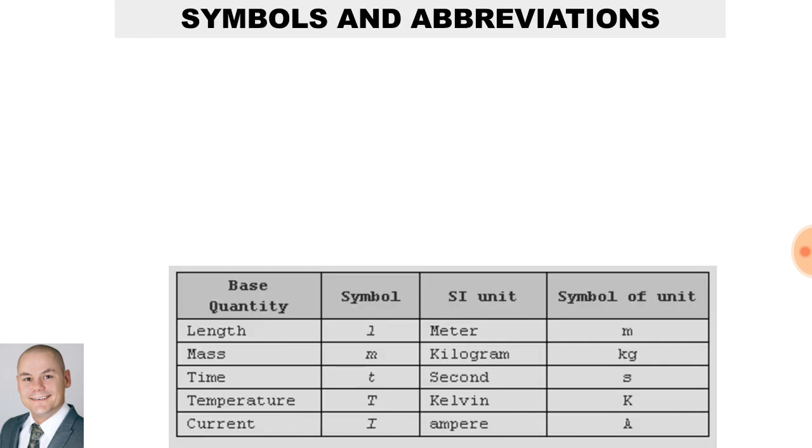These are some symbols and abbreviations used in engineering science. Meter, the symbol is M. Liter, the symbol is L. Ampere, the symbol is A. Voltage, the symbol is V. Ohm, the symbol is Omega. And watts, the symbol is W.